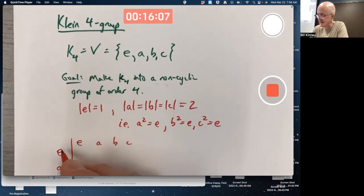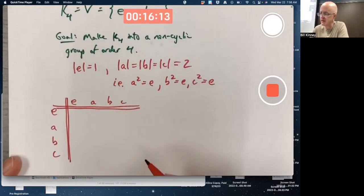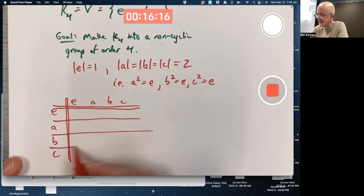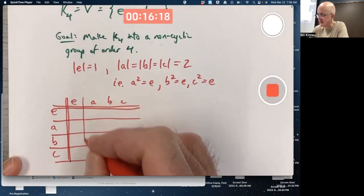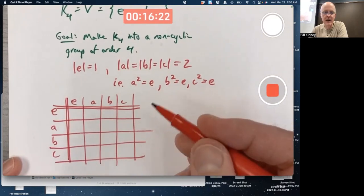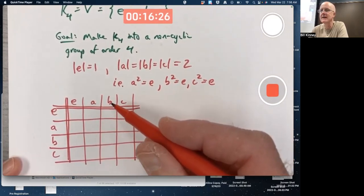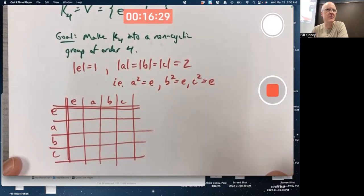Now, again, these symbols are arbitrary. It's natural to use E for the identity because that's what we've been doing. But A, B, and C are arbitrary. I could use other symbols. The fact that I'm putting them in alphabetical order once I get past E, doing A, B, and C might seem arbitrary.